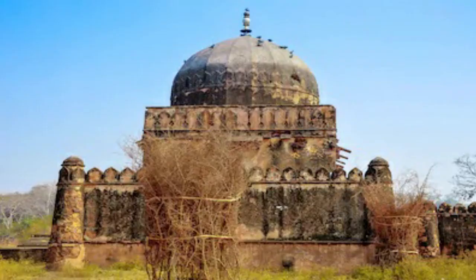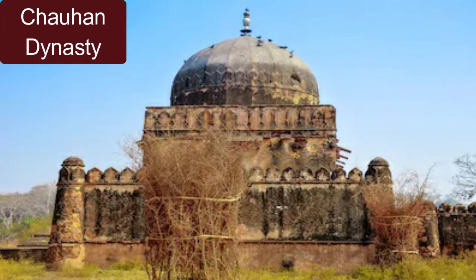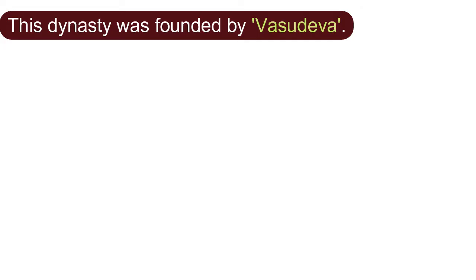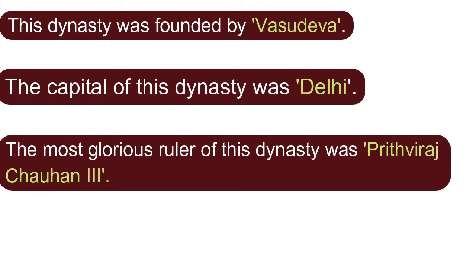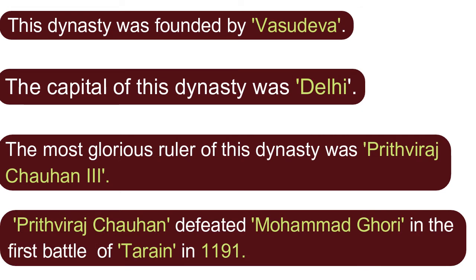Chauhan Dynasty: This dynasty was founded by Vasudeva. The capital of this dynasty was Delhi. The most glorious ruler of this dynasty was Prithviraj Chauhan. Prithviraj Chauhan defeated Muhammad Gori in the first battle of Turan in 1191.